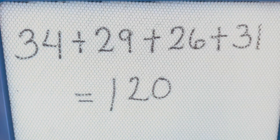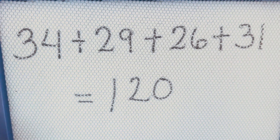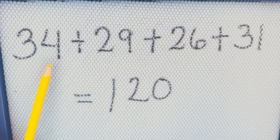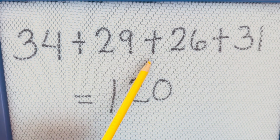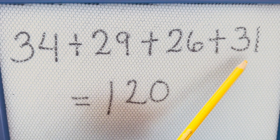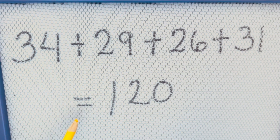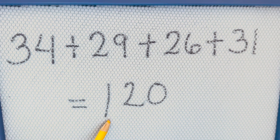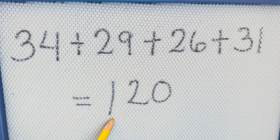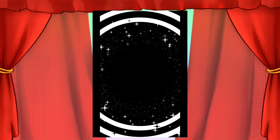And lastly, 34 plus 29 plus 26 plus 31 is equals to 120.